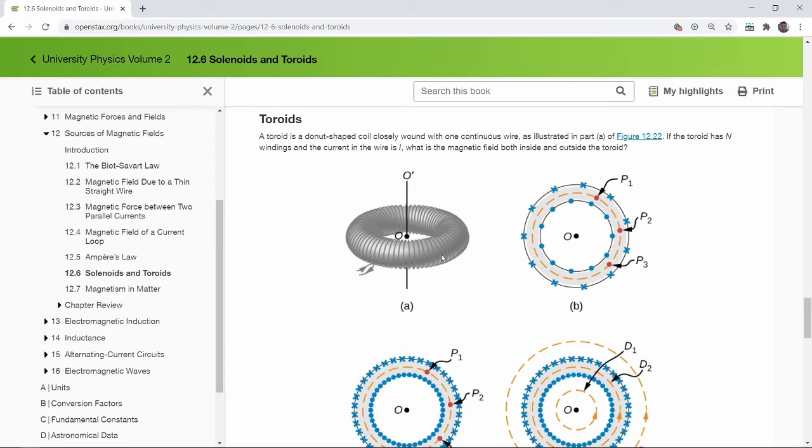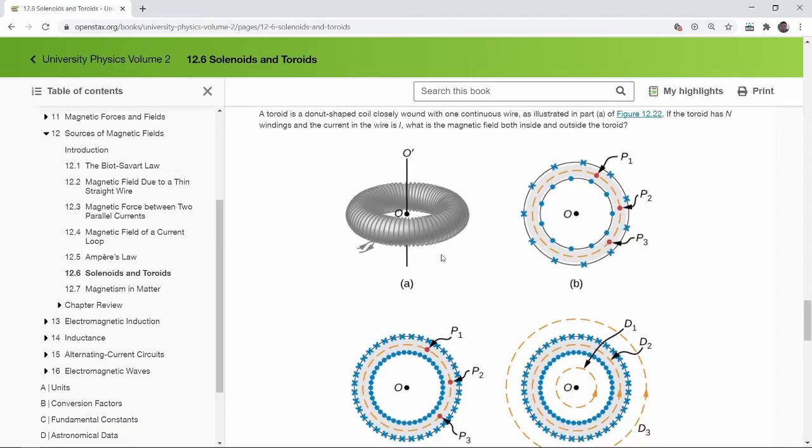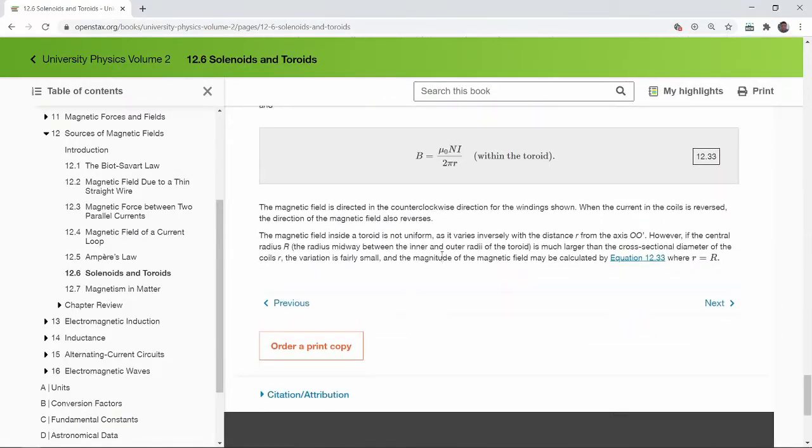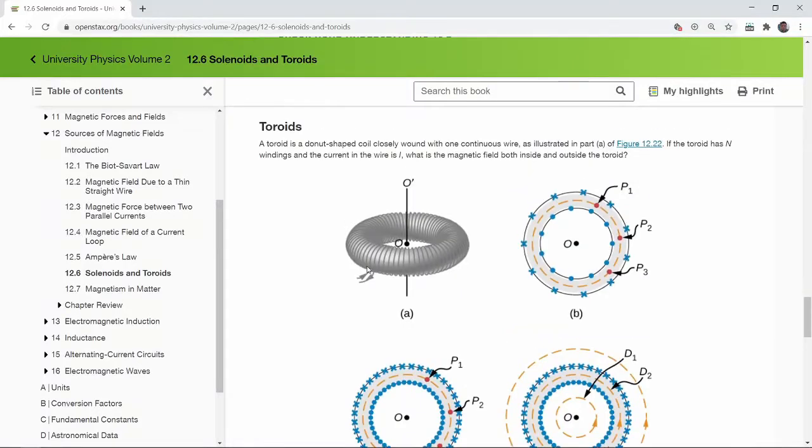So take a look at that and also take a look at the lecture videos on that. In my calculations, I assume that the cross section of toroid is rectangular instead of circular that you see here. Both of the derivations that you see in the textbook and in the lecture, they are both valid for whatever shape of the cross section. If you look at the derivation carefully, you will see that the derivation doesn't make any assumption about the shape of the cross section of toroid.